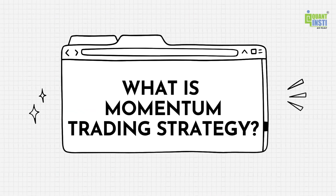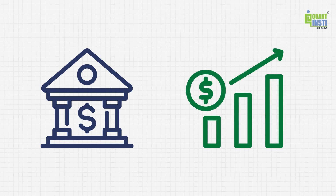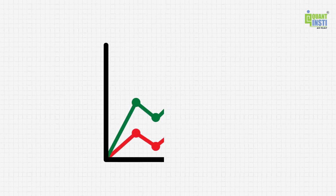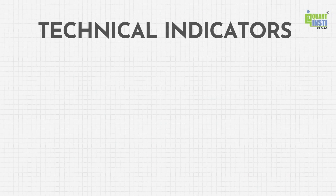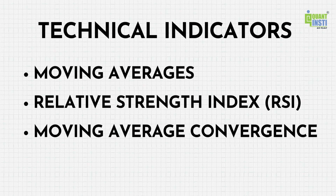What is momentum trading strategy? Momentum trading strategy is used in financial markets, where traders capitalize on the continuation of an existing trend. Momentum traders focus on identifying stocks, currencies, or other assets that are exhibiting strong price movements in one direction. To identify momentum opportunities, traders often use technical indicators like moving averages, relative strength index, and moving average convergence divergence.